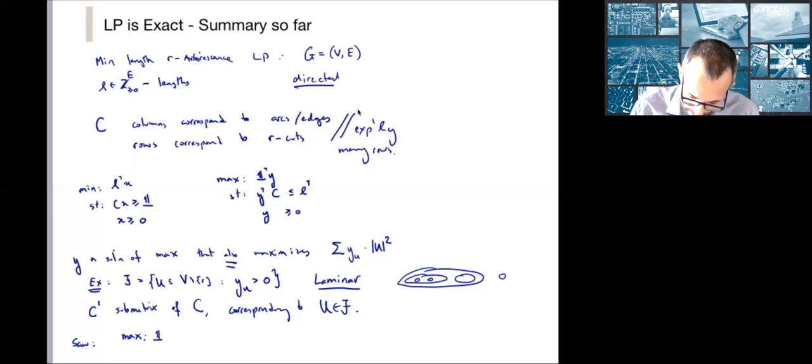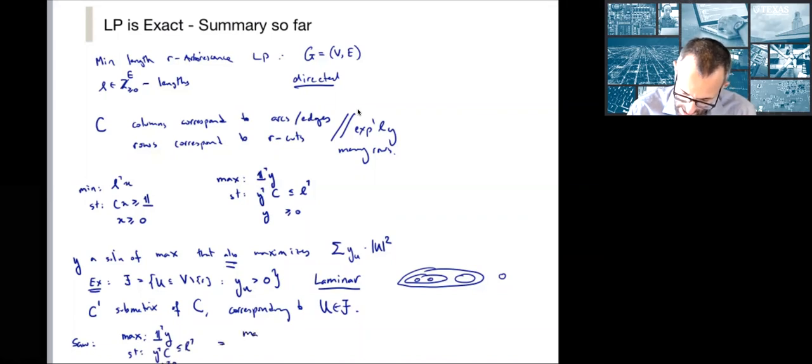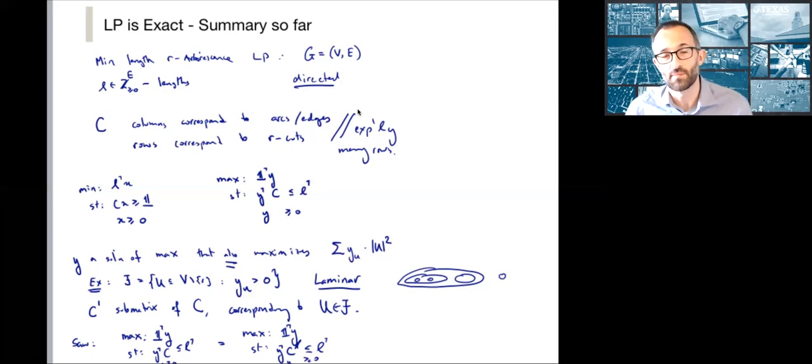We saw that the max had the same value as maximizing over C dash less than L transpose. What's the advantage? It has the same value. But secondly, it's very easy to extend an optimal solution from the right—the maximization with C dash—to an optimal solution on the left. The reason this is important is what we're going to show next.